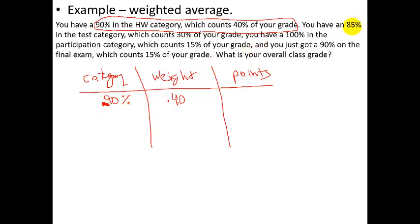Next category, we have an 85%, and that category counts 30%, so .30. Next category, we have 100%, that counts .15. And the last category, we have a 90%, and that also counts 15%.